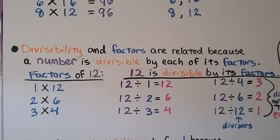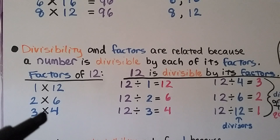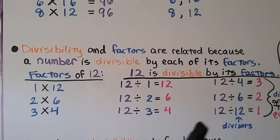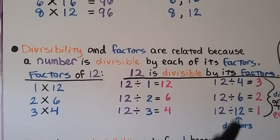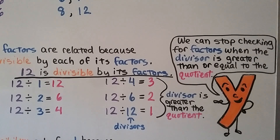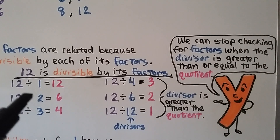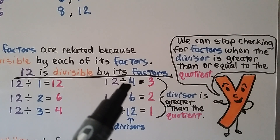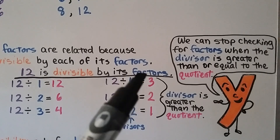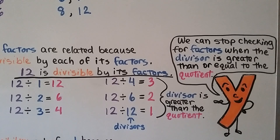Divisibility and factors are related because a number is divisible by each of its factors. Here are the factor pairs of 12: 1 and 12, 2 and 6, 3 and 4. We can do 12 divided by 4 is 3, 12 divided by 6 is 2, and 12 divided by 12 is 1 — the blue numbers are the divisors. We can stop checking for factors when the divisor is greater than or equal to the quotient, since the pairs would just repeat.